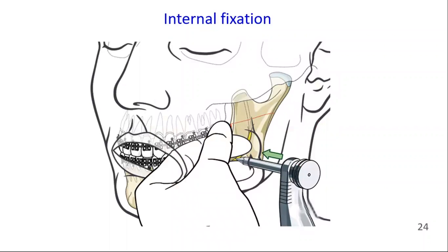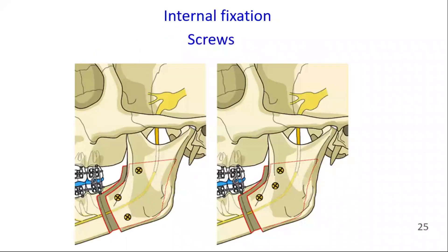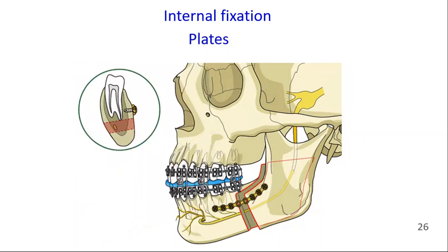Internal fixation is usually performed with positioning screws, plates, or combinations. Screw placement is usually performed with either transbuccal instrumentation or angulated drills and screwdrivers. A minimum of two and preferably three bicortical position screws are placed between the buccal and lingual cortices. Care should be taken to avoid damaging the inferior alveolar nerve. Two possible patterns of screw placement are demonstrated here. A plate can be applied across the segments on the lateral aspect of the mandible using monocortical screws, with a minimum of two screws on each side of the osteotomy. Avoid placing the plate and screws in close proximity to the alveolar canal in order to avoid damage to the inferior alveolar nerve.